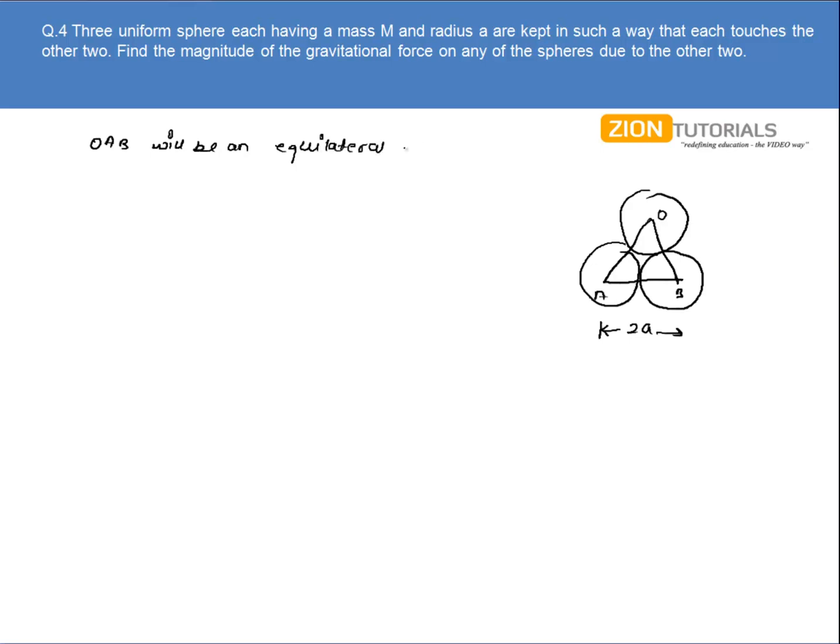Now what we have to do is calculate the force on each of the spheres. Let's say I'll calculate the force on sphere 1 due to 2 and 3. So it will be a force of attraction. The force on 1 due to 2 will be in this direction and force on 1 due to 3 will be in this direction.